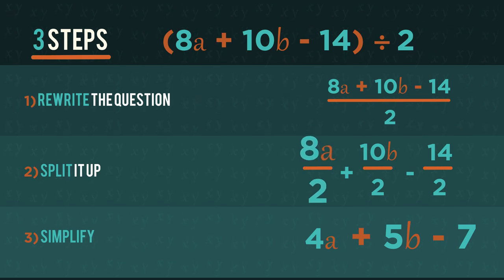So 8a divided by 2 is 4a, 10b divided by 2 is 5b, and 14 divided by 2 is 7. Simple.